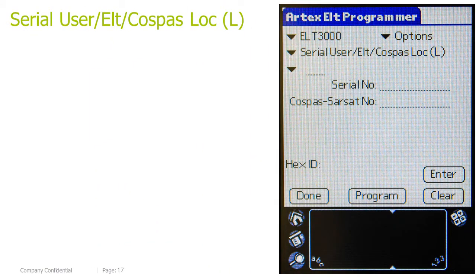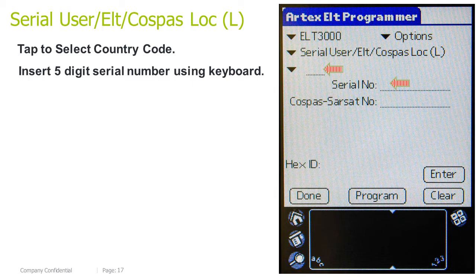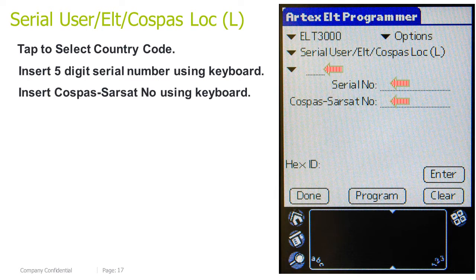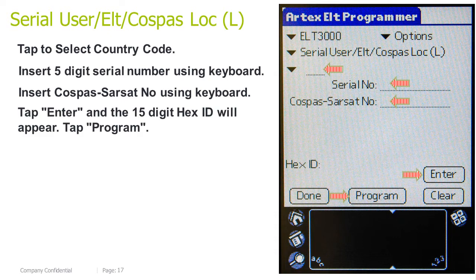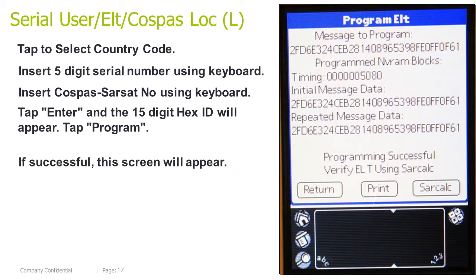Serial user ELT COSPAS location log: tap to select a country code. Insert the 5-digit serial number using the keyboard. Insert the COSPAS-SARSAT number using the keyboard. Tap Enter and the 15-digit hex ID will appear. Tap Program. If successful, this screen will appear.